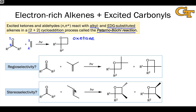For example, if we take trans-2-butene and react it with a photo-excited ketone, should we expect the reaction to be stereospecific, giving solely the trans isomer, or will we get a mixture of diastereomers? An understanding of the mechanism can help us appreciate this and make predictions.